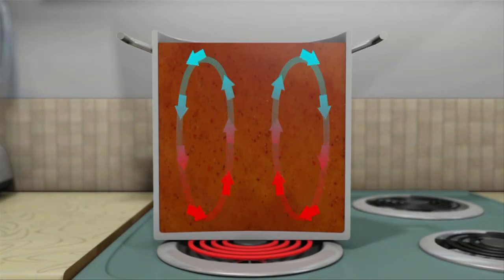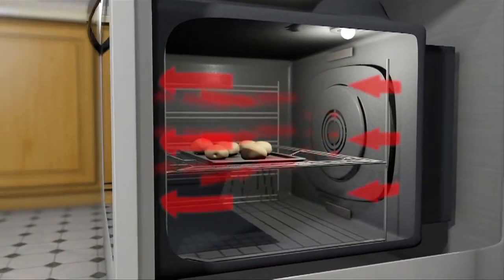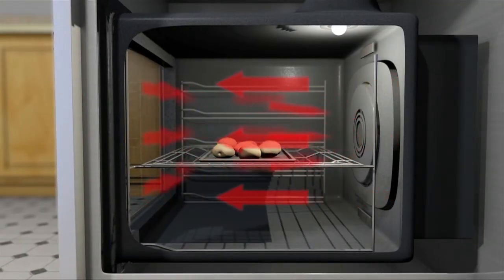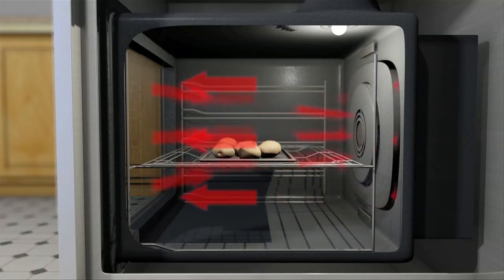Natural convection comes about because as molecules are heated, they become less dense and rise, and are replaced by cooler molecules, which are then heated and rise, continuing the cycle. Forced convection employs fans or pumps to move the hot air or liquid around the food. As new molecules are continuously delivered to the surface of food to impart heat, convection can substantially speed cooking processes.